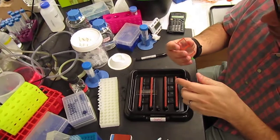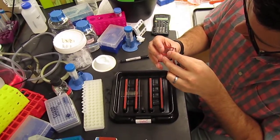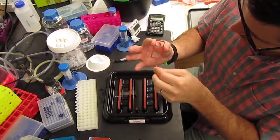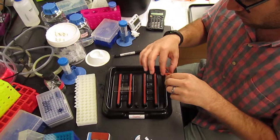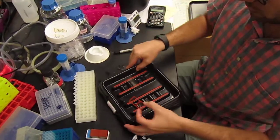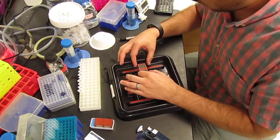We're going to remove the backing from the gasket. We're going to line the gasket with the top of our slide.